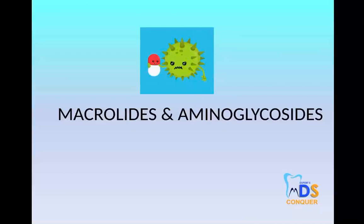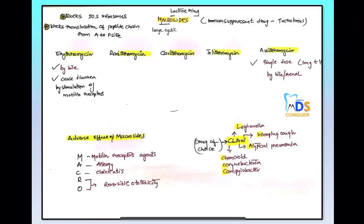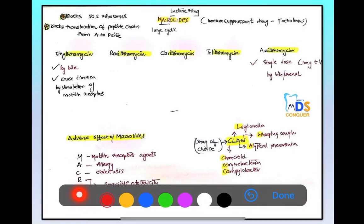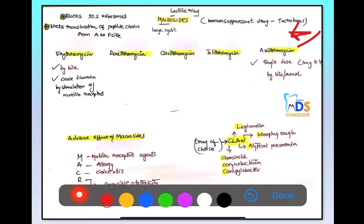We are going to discuss macrolides and aminoglycosides. The drugs under macrolides include erythromycin, roxithromycin, clarithromycin, telithromycin, and azithromycin. An important exam question is: which of the following is an immunosuppressant macrolide?